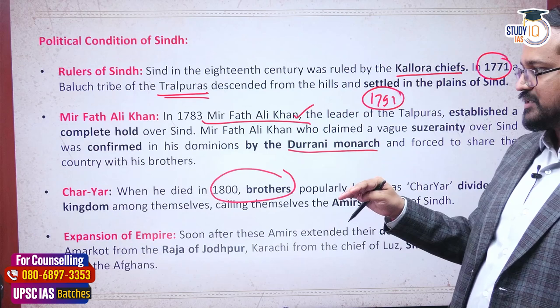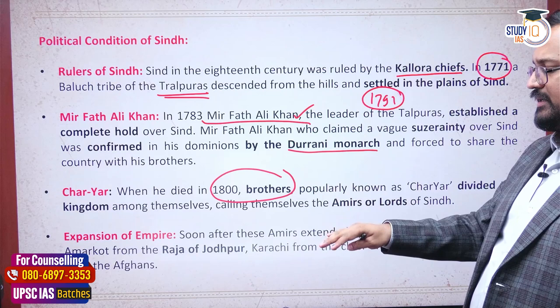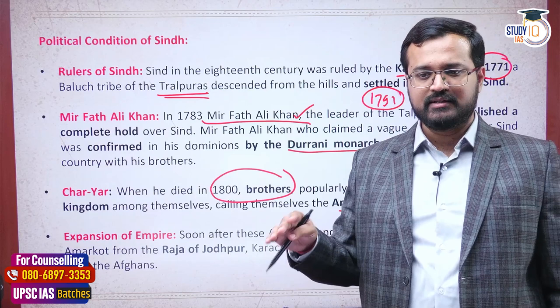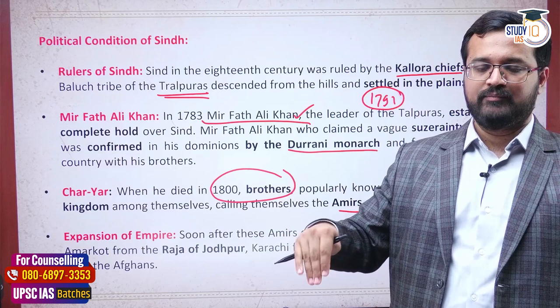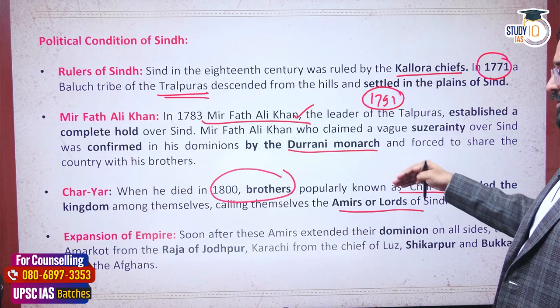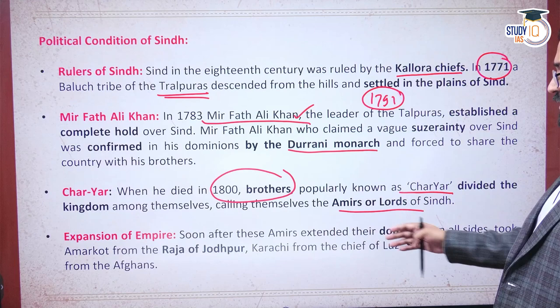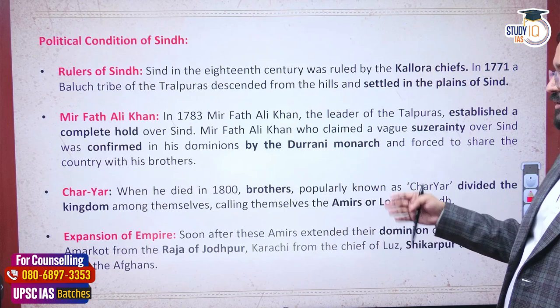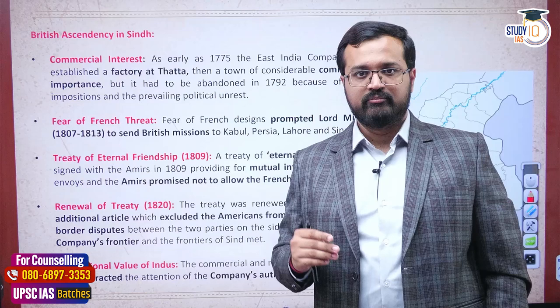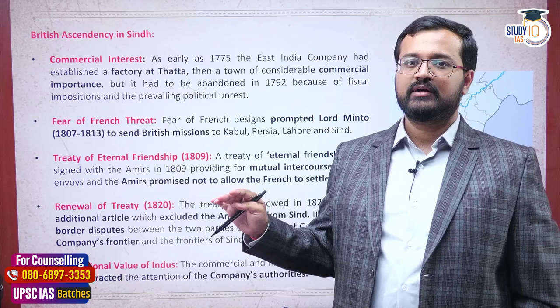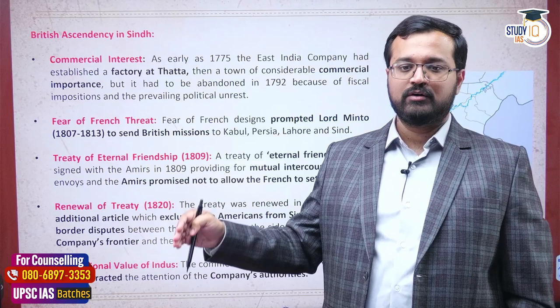Once Fat Ali Khan died, his four sons divided the kingdom among themselves - these char bhai, four brothers, sons of Mir Fat Ali Khan, ruled together as 'char yare' (four friends). They soon started conquering surrounding areas too, from Karachi to the Gujarat region, which made Sindh a prominent principality from 1800 onward. By this time, the British were also becoming a significant personality in India, having conquered the Marathas and by around 1820 annexing the Peshwa's territory to create Bombay Province.